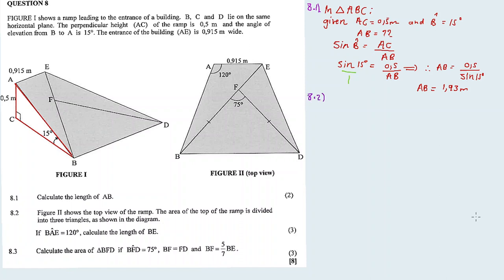8.2: Figure 2 shows the top view of the ramp. The area of the top of the ramp is divided into three triangles: triangle 1, 2, and 3. As shown in the diagram, if angle BAE equals 120 degrees, calculate the length BE.